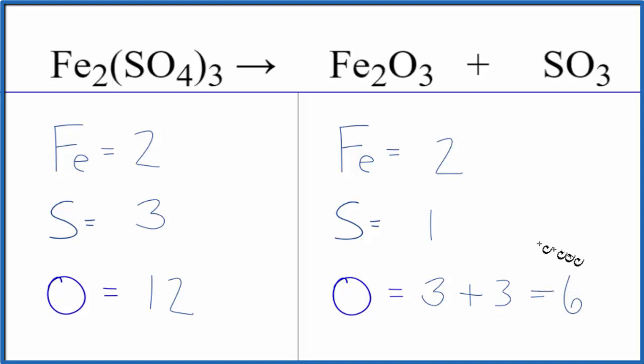Why don't we balance the sulfur first? I always leave oxygen until last. Put a 3 in front of the SO3. 1 times 3 - that'll give us the three sulfurs.